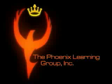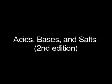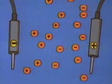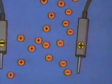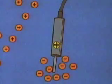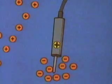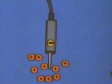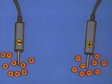Acids, bases, and salts all form ions in solution. In the presence of an electric field, the negative ions experience a force toward the positive pole and the positive ions in the other direction. This constitutes the flow of an electric current.